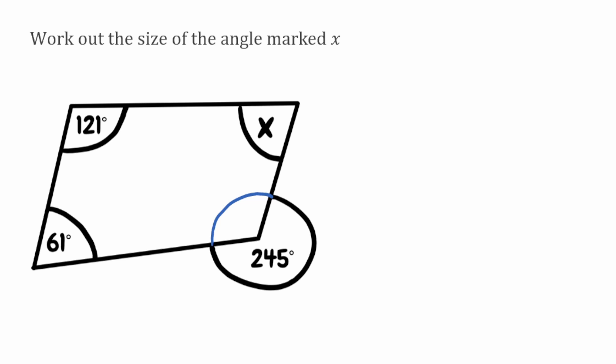We can figure out this missing angle here by using angles around a point. So angles around a point will always add up to 360 degrees. So what we're going to do is take our 360 degrees and take away our exterior angle which in this case is 245. And once we do that, that gives us 115. So this interior angle here would actually be 115 degrees.